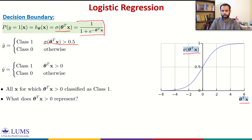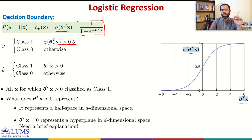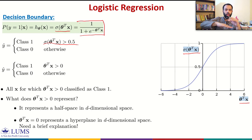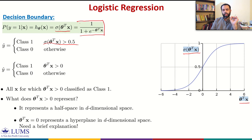Theta transpose X greater than 0 represents a half space in d-dimensional space. Theta transpose X equal to 0 represents a hyperplane in d-dimensional space, and this hyperplane divides the space into two half spaces. This is very important because we will use this concept in support vector machines.